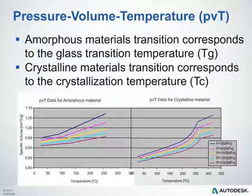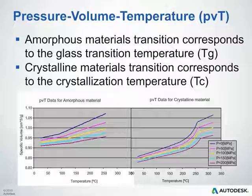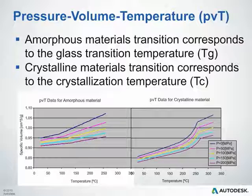The PVT diagram also gives us the opportunity to capture a unique transition that happens in amorphous and semi-crystalline materials. With amorphous materials, this transition corresponds to the glass transition temperature. On the left, in an amorphous material's PVT diagram, you'll see the slope is somewhat gradual, and then at a certain point — around 90 degrees Celsius — there is a sudden increase in slope. That point at which the slope changes is our glass transition temperature. For semi-crystalline materials, we call this transition the crystallization temperature — you can see how the curve changes significantly toward the 250 degrees Celsius point on the right-side curve.